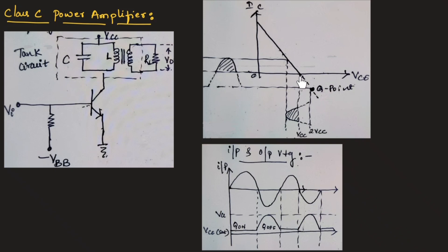As you can see in this diagram, since the Q point is below the cutoff region, the output will be for less than 180 degrees as shown in this figure. The tank circuit is used as a load, where we will be measuring the output voltage.